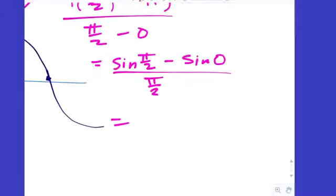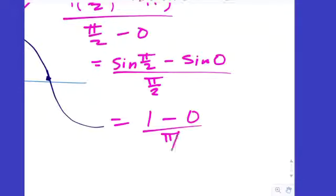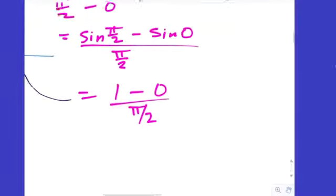It's 8:57, folks, which means it is unit circle time. What is sine of pi halves? 1. And sine of 0 is 0. So it's 1 over pi halves, and then we flip and get 2 over pi.